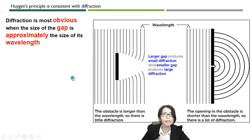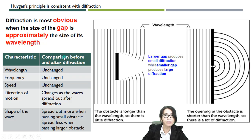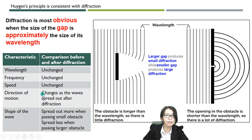Diffraction is most obvious when the size of the gap is approximately equal to the wavelength. A larger gap produces smaller diffraction, so the diffraction is not obvious. A smaller gap produces a very obvious diffraction pattern. The wavelength is unchanged before and after diffraction. The frequency is also unchanged before and after diffraction. The speed of the wave is also unchanged. However, the direction of motion will change as the waves spread out after diffraction.